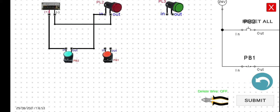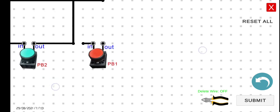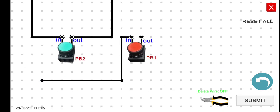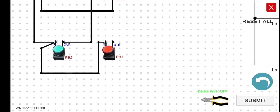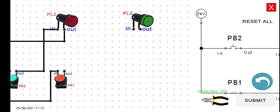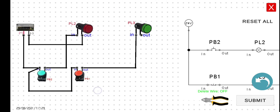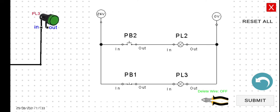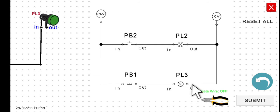It would be easier to connect PB1 input to PB2. Next, connect the output of PB1 to the input of PL3. For the last connection, connect the output of PL3 to the negative terminal of the power supply — or alternatively connect it to the output terminal of PB2. In this case it would be easier to connect PL3 output to PL2 output.